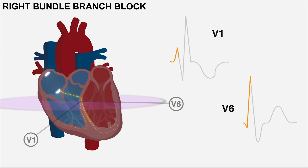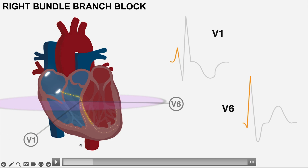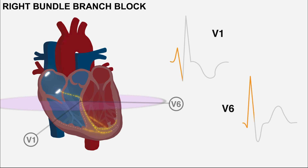Then, as the right bundle branch is blocked, the impulse will go down the left bundle branch and along the left Purkinje fibers. This causes a positive deflection in V6 and a negative deflection in V1.